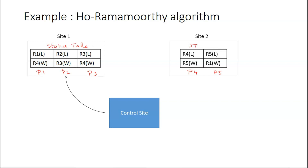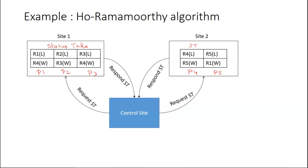As per our algorithm, the control site sends a request message for the status table to both local sites. On receiving this request, both sites one and two will respond with their status tables. On receiving the status tables of site one and site two, this is the one-phase construction — the wait-for graph is constructed.